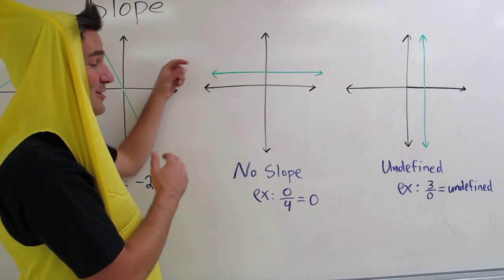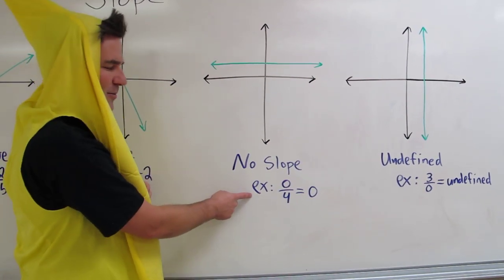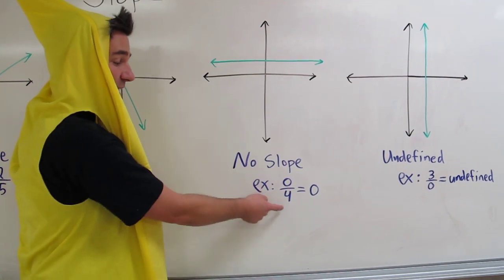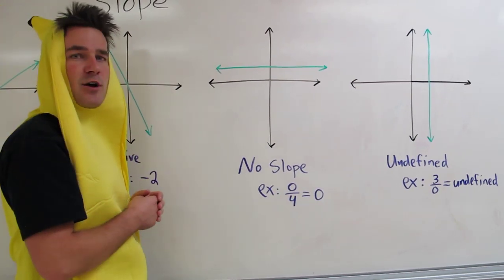You know you have a no slope situation when you're calculating slope and you end up with a 0 in your numerator. If you have 0 divided by 4, that's just 0. So this would be no slope.